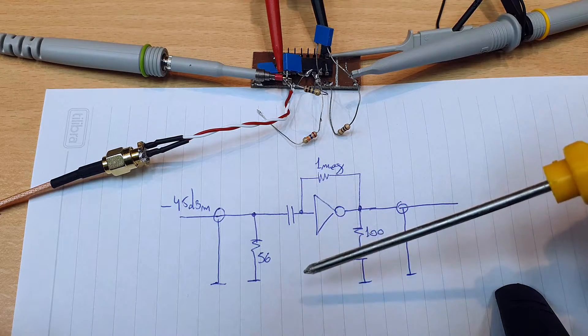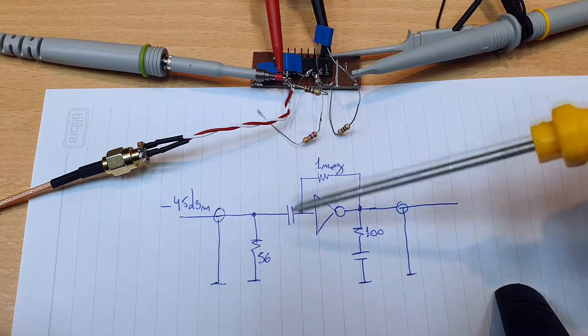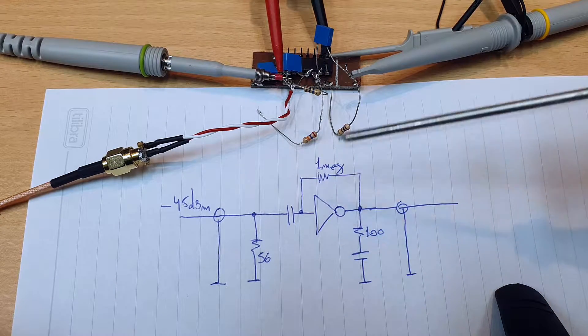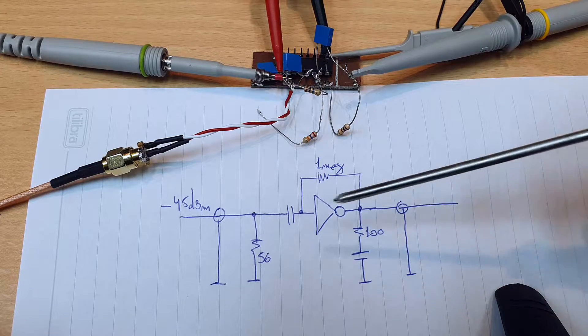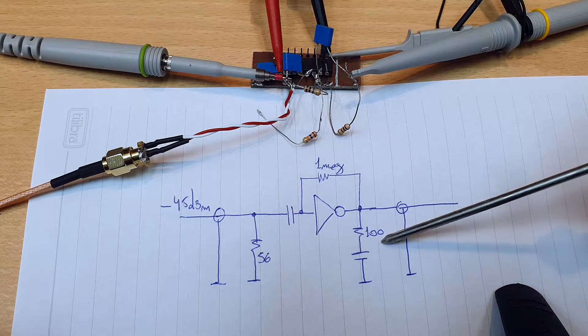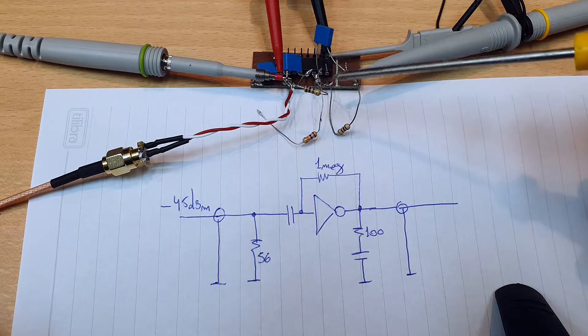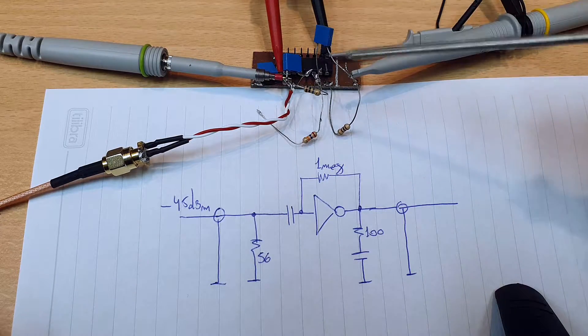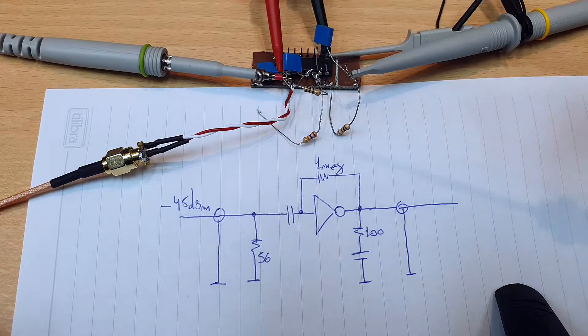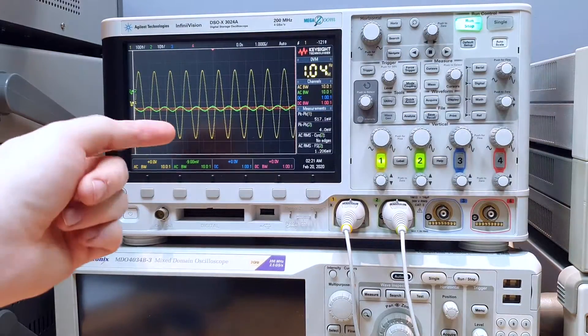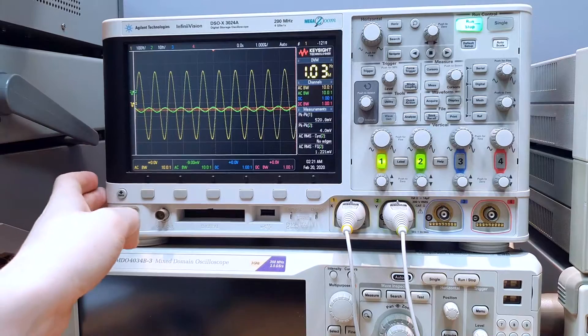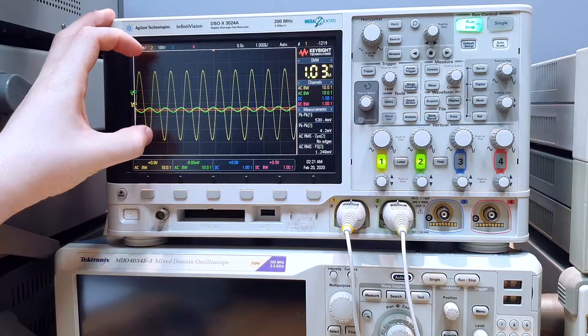I drew it here and we have the 1 meg without the feedback loop to control the gain. So we're gonna get the maximum possible gain with this output impedance. And sorry, the circuit is a bit messy. I was testing a lot of configurations here and well, it works.